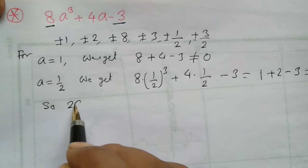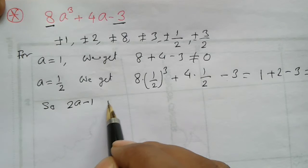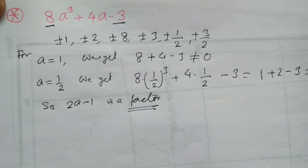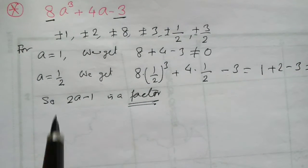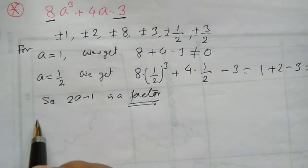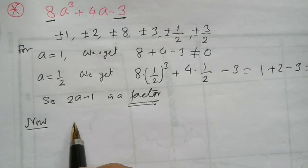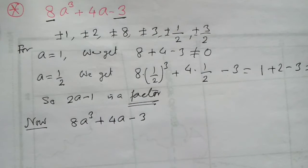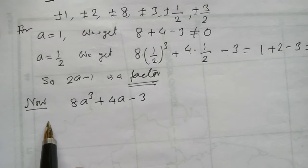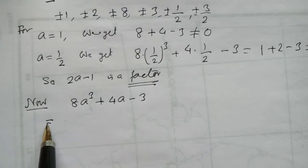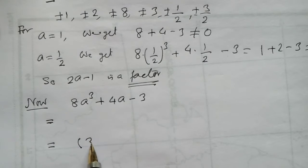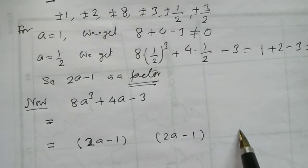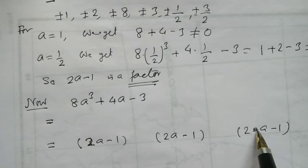So (2a minus 1) is a factor. We use this factor to factorize the polynomial. We write 8a cube plus 4a minus 3 equals (2a minus 1)(2a minus 1)(2a minus 1) — that is, we set up the long division with (2a minus 1) as the factor.